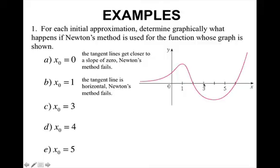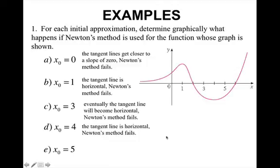At x₃, eventually the tangent line will become horizontal, so Newton's method also fails. Because if I was to draw tangent lines, you'll see that my tangent lines will cross over here. At x₄, I get another horizontal tangent line, so Newton's method fails.